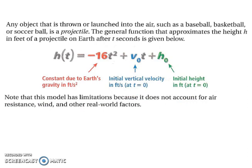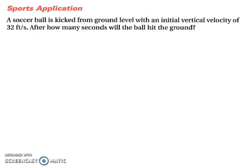Let's put this formula to good use. So, a sports application, a soccer ball is kicked from ground level with an initial vertical velocity of 32 feet per second. After how many seconds will the ball hit the ground?